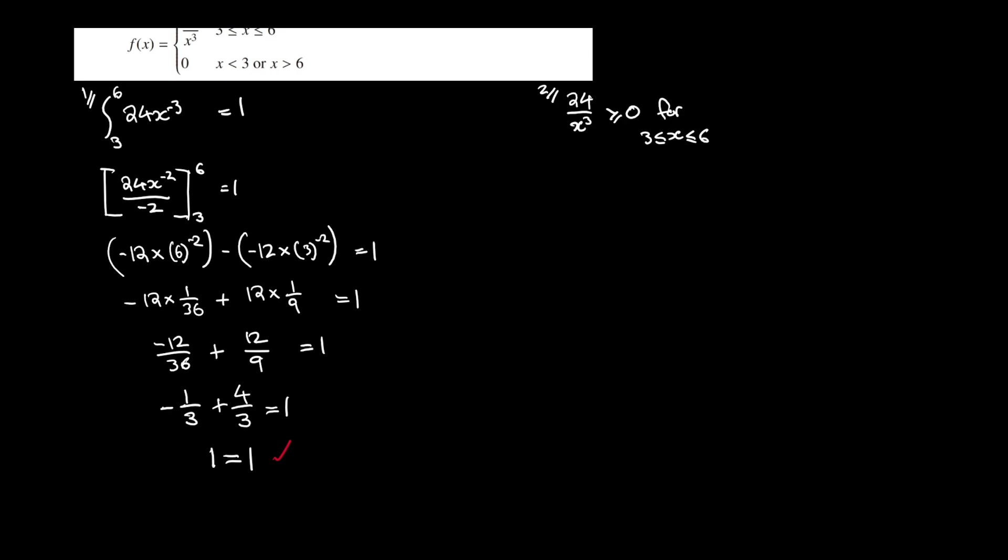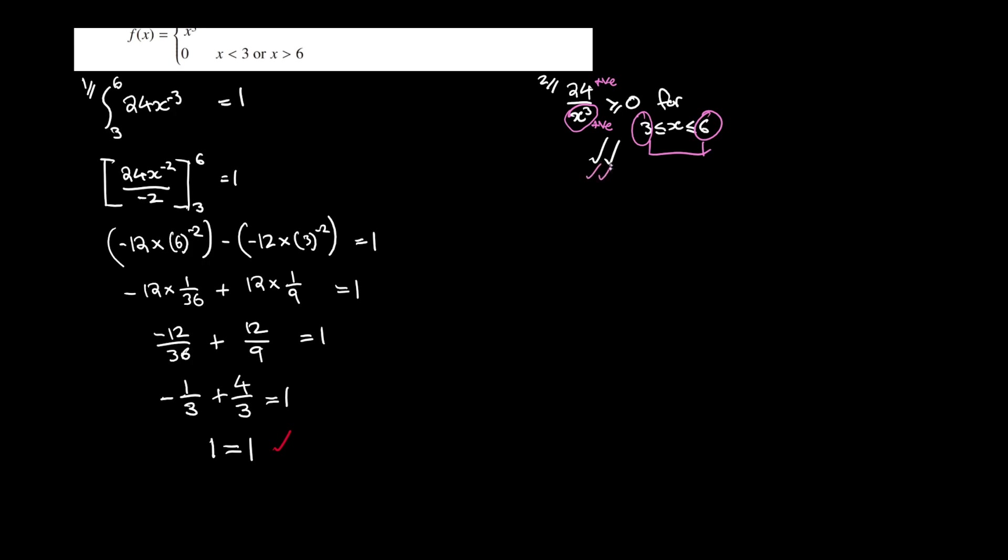The second fact here is that all of the y values must stay positive. This is a true statement, because we've got x on the denominator and it's cubed. We need to divide by a positive number for this to stay positive for values of x. Now our x inputs go from 3 to 6, so those are always going to be positive numbers, which means this will always be positive. So you always have positive y values. Therefore the function is a probability density function.